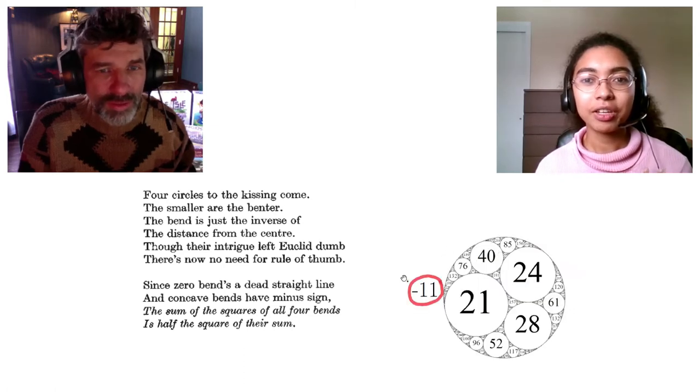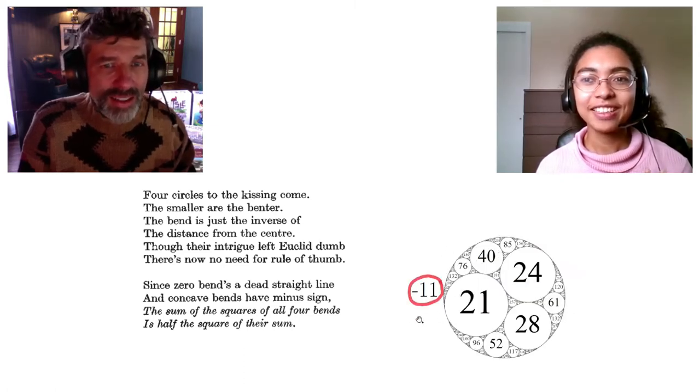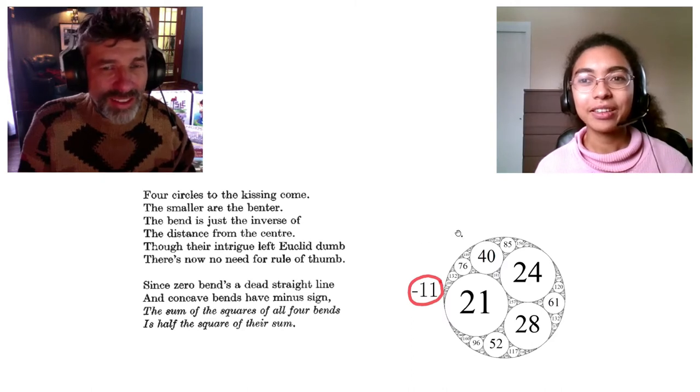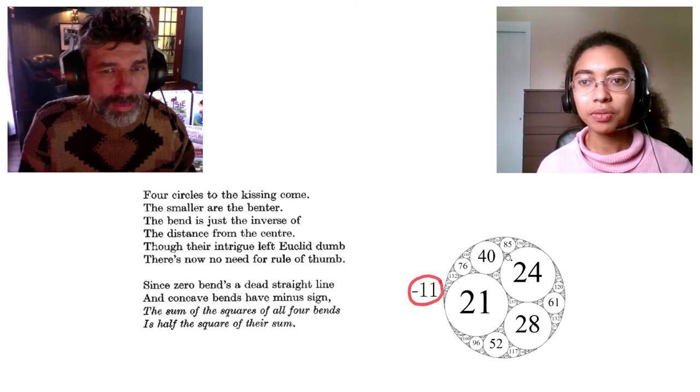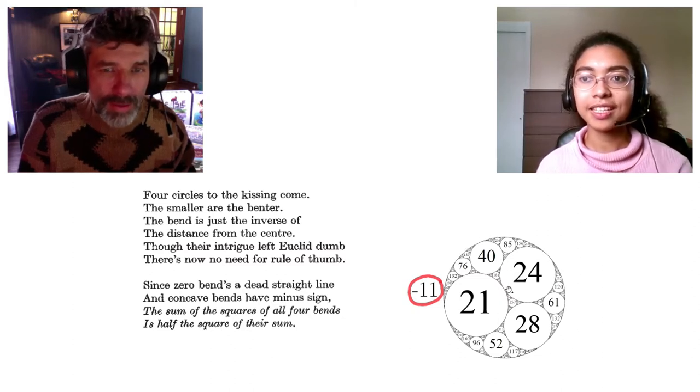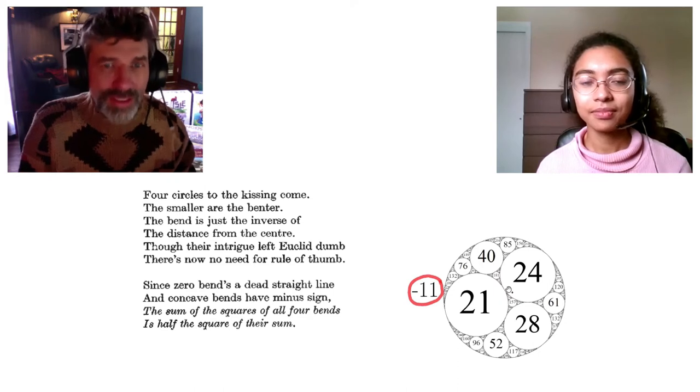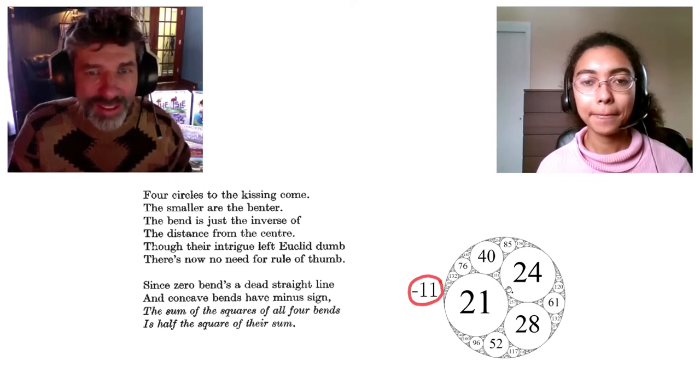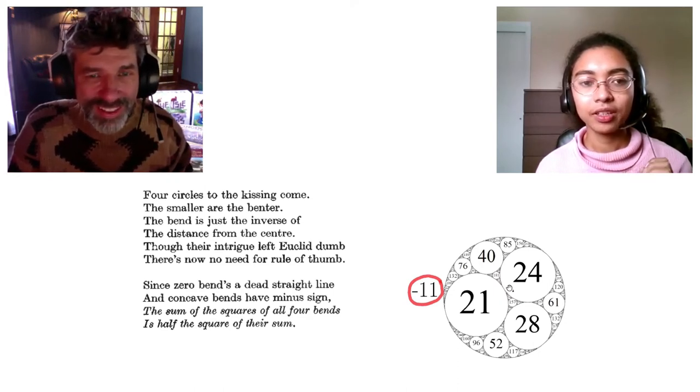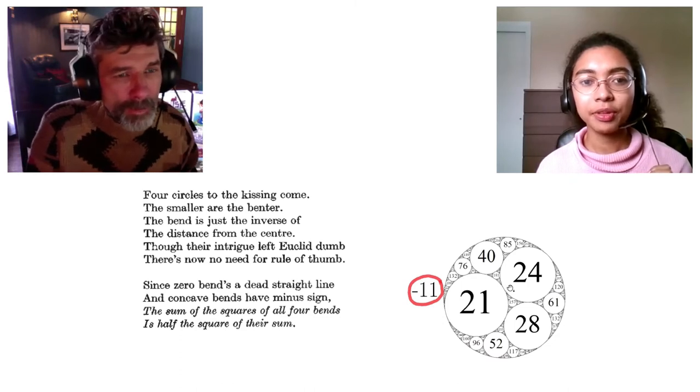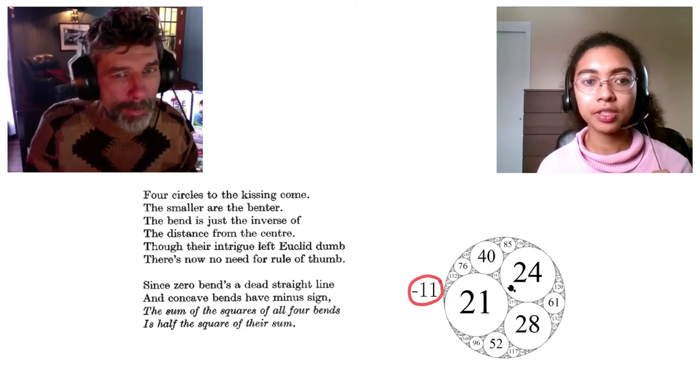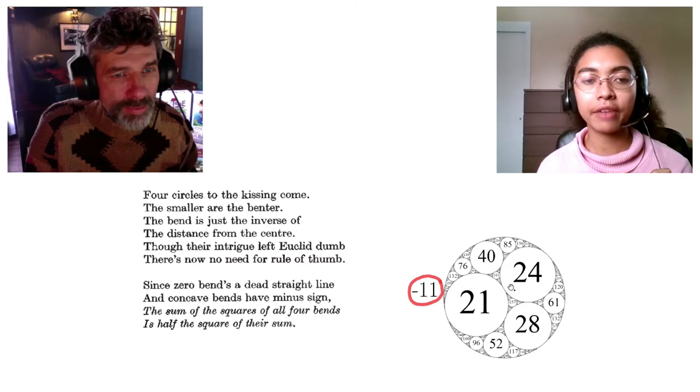So, remember how you were commenting on the minus sign? Right. It means that instead of being touching like on the outside of the circle, all those circles are touching on the inside of it. Right. Right. Okay. Okay. And then the last two lines here. The sum of the squares of all four bends is half the square of their sum.